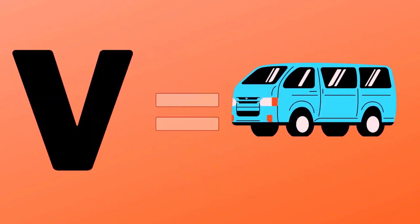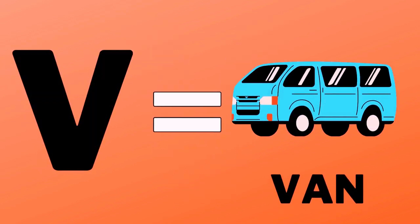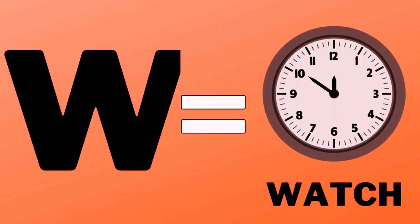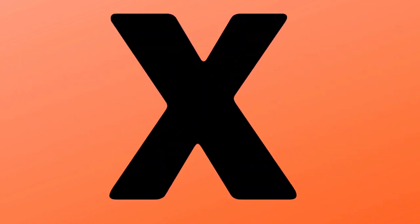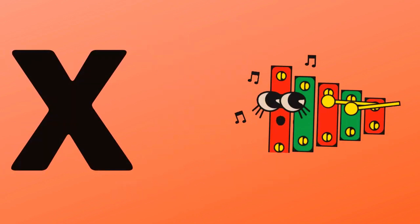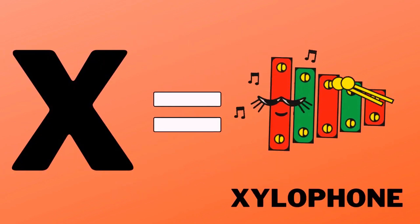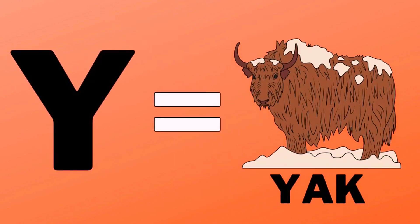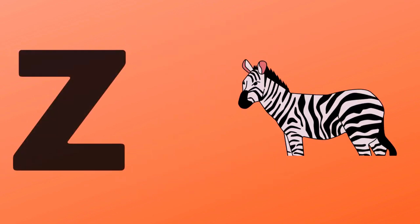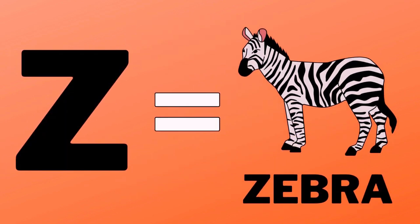V for van, W for watch, X for xylophone, Y for yak, Z for zebra.